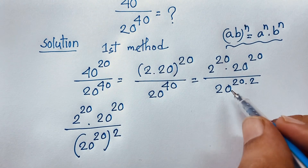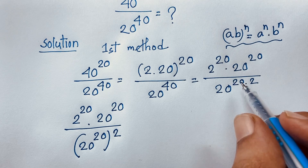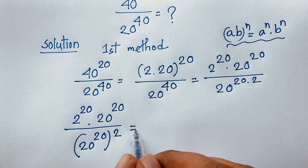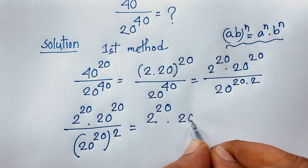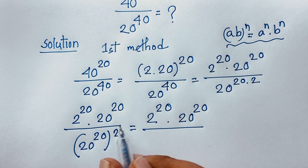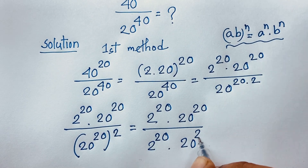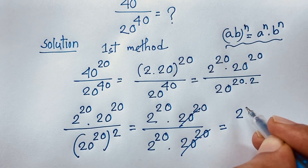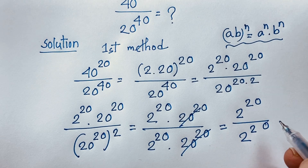You know the exponential law: a to the power nm equals (a^n) whole to the power m. According to this law, the denominator is (20^20)^2, which equals 20^20 times 20^20. So the expression becomes 2 to the power 20 times 20^20, over 20^20 times 20^20. The 20^20 terms cancel out, leaving 2 to the power 20 over 20 power 20.